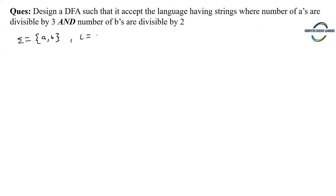What is the language here? Divisibility by 3 means 0 is also divisible by 3, so the smallest combination is 0 a's and 0 b's — that is epsilon. Then we may have 3 a's and 0 b's. Similarly, 0 a's and 2 b's, so 'bb' should be accepted, as well as 3 a's and 2 b's — any combination. They may come in any order, like starting with b, b, then triple a.